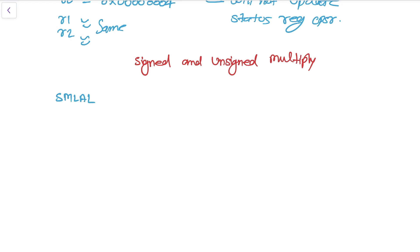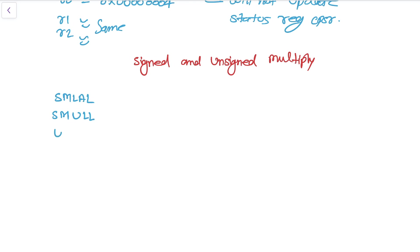Here we have SMLAL — signed multiply and accumulate long. There is another instruction SMULL — signed multiply long. And then we have UMULL — unsigned multiply long.